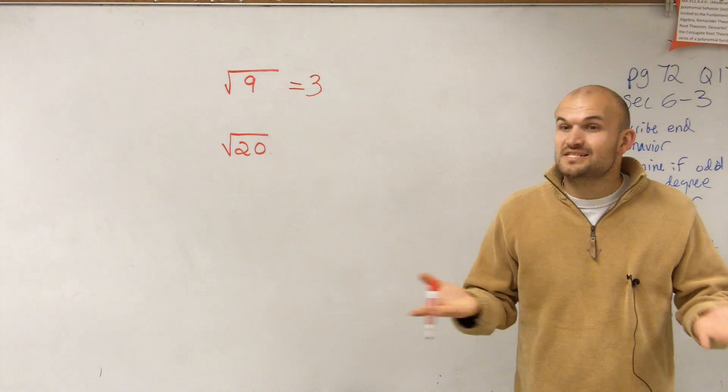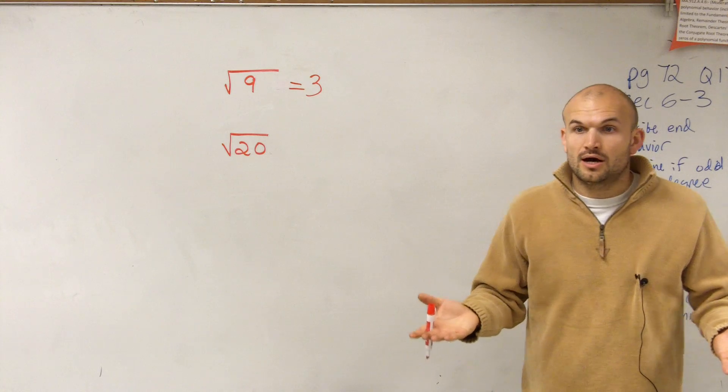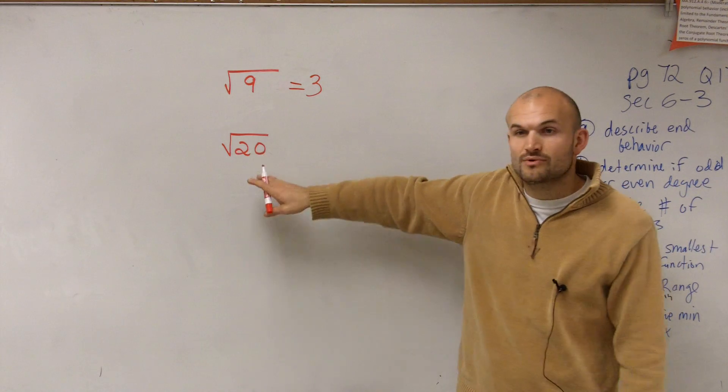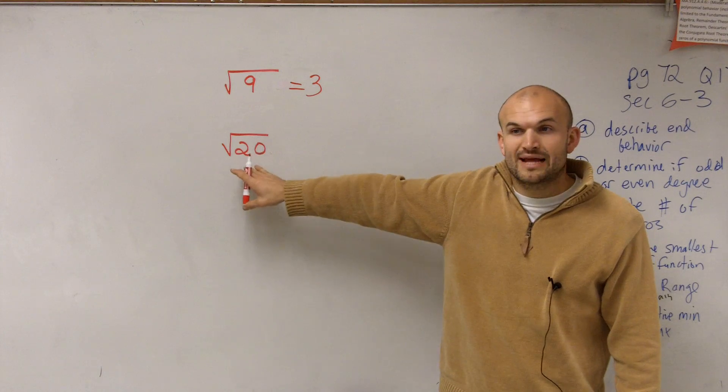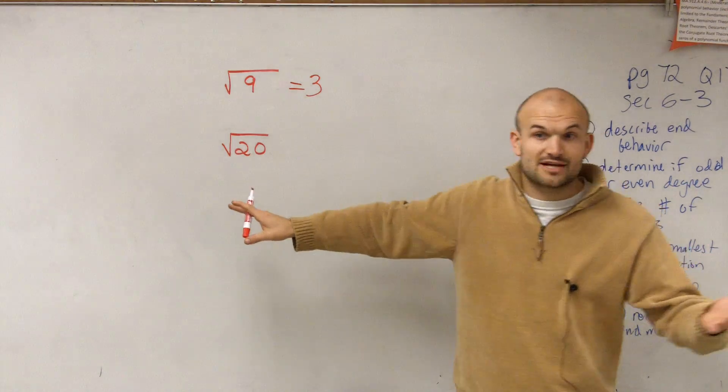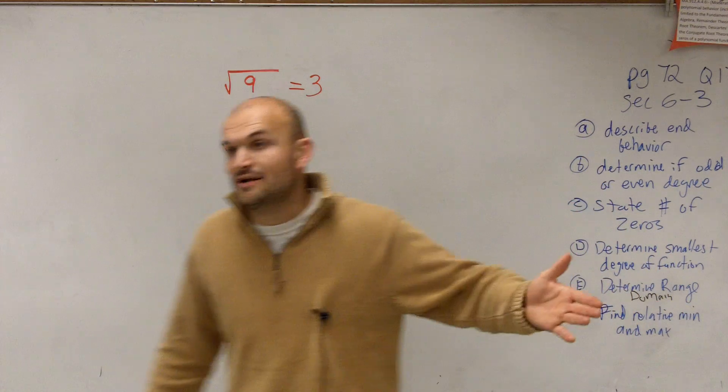Well, it's going to be 4 and a decimal of some sort, right? When you try to take the square root and it doesn't give you an integer, then the number is going to be irrational, meaning it's actually going to be a decimal that repeats on and on forever.